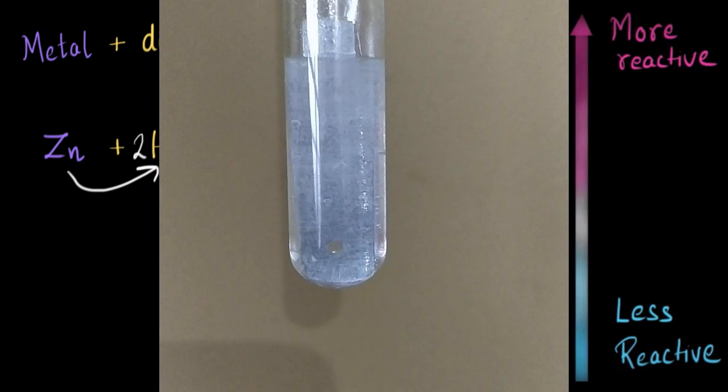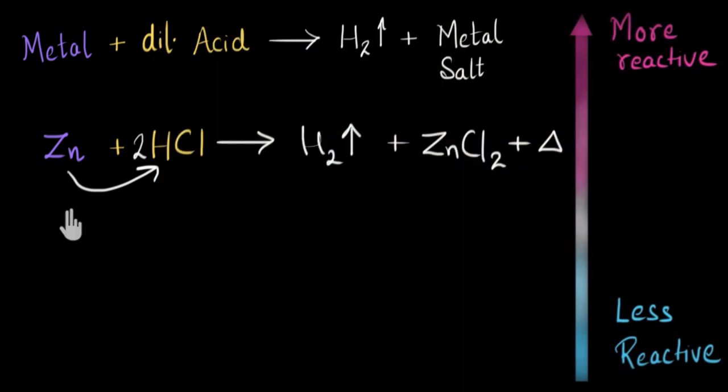And also with this, there is heat being generated. I can notice that the test tube is getting warmer because of the heat. So when a metal reacts with dilute acid, we see the bubbling of hydrogen gas and the warming of the test tube.